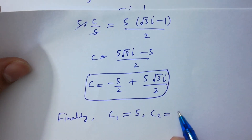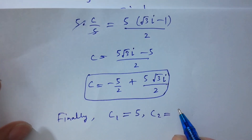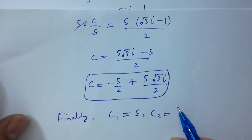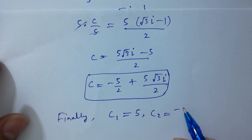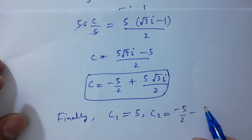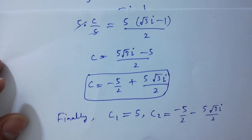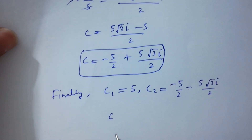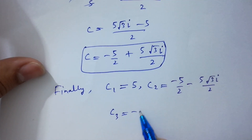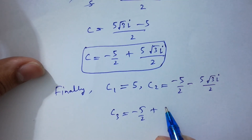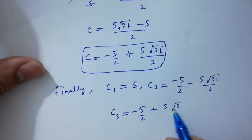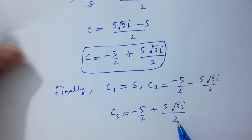So finally, c₁ equals 5, c₂ equals minus 5/2 minus 5√3·i/2, and c₃ equals minus 5/2 plus 5√3·i/2.